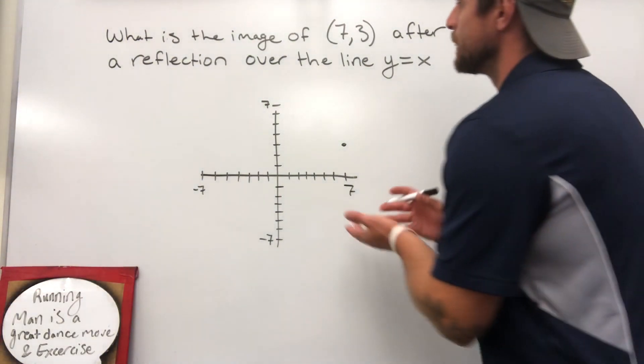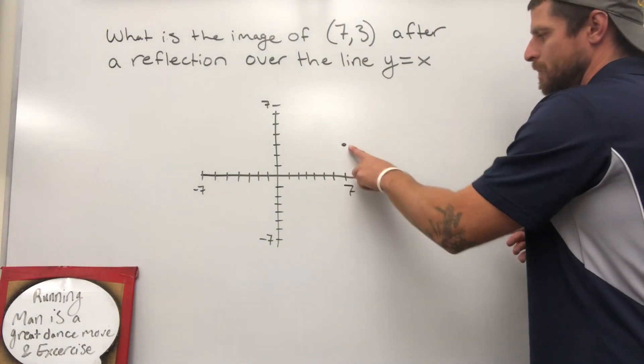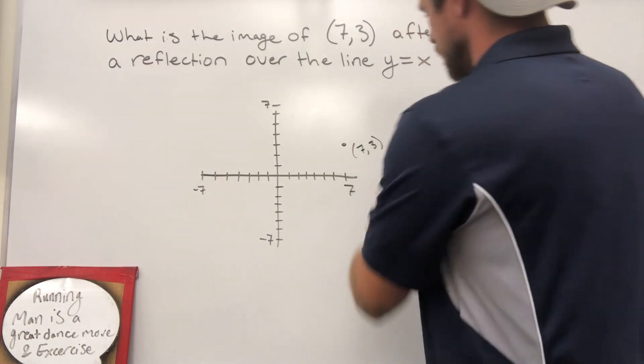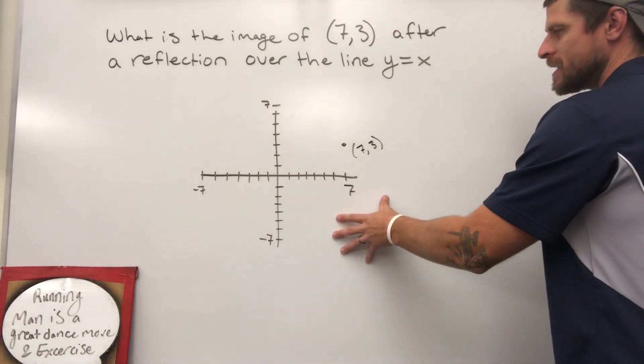All right, so we've got this problem. What is the image of (7, 3)? So we've got a point at 7 to the right, 3 up. There's our coordinate on the Cartesian plane.